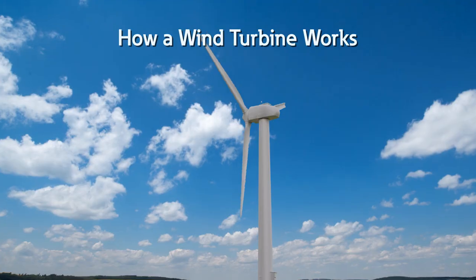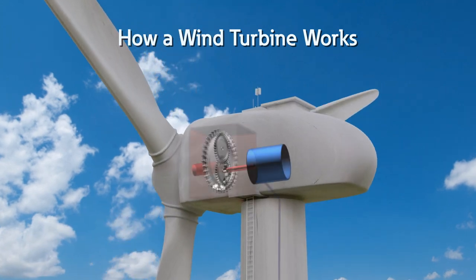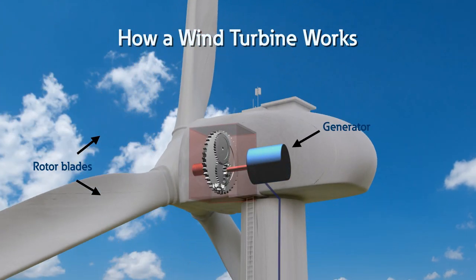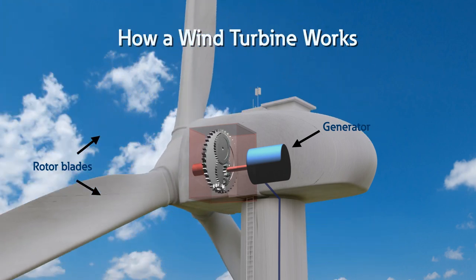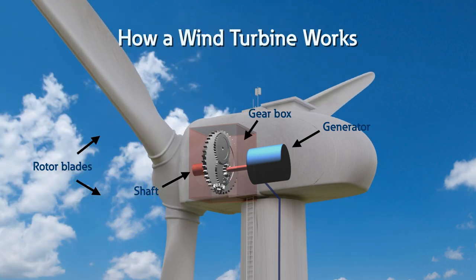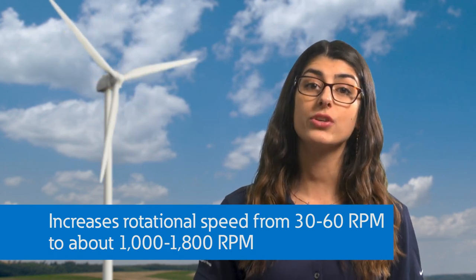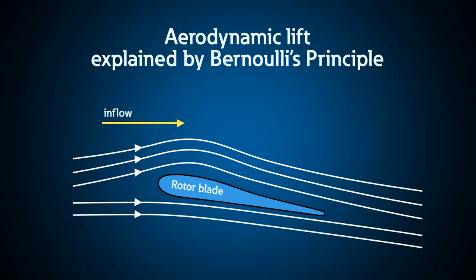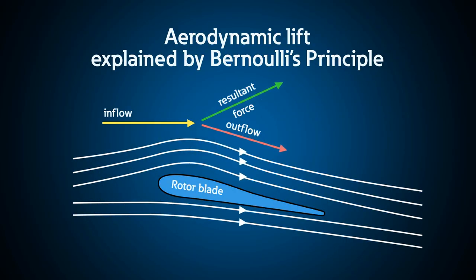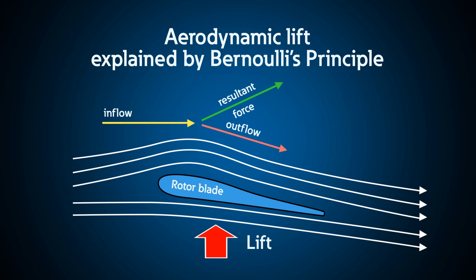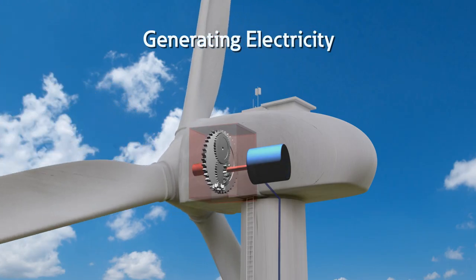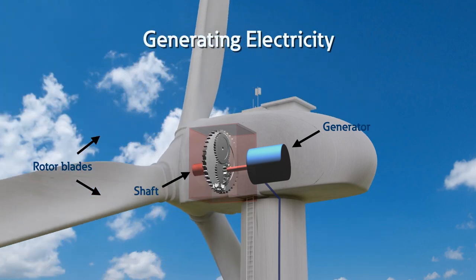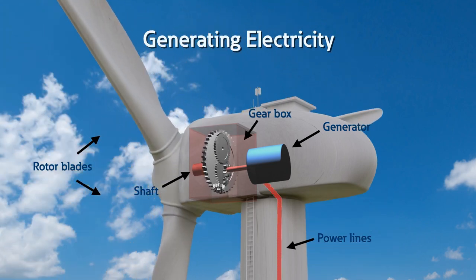A simple wind turbine consists of four main parts, including a generator, rotor blades which rotate when wind is blown over them causing the rotor to spin, a shaft which drives the generator, and a gearbox which increases the rotational speeds from about 30 to 60 rpm to about 1,000 to 1,800 rpm. The rotor blades work like an airplane wing or a helicopter rotor blade, explained by Bernoulli's principle. When wind flows across the blade, the air pressure on one side decreases and the force causes the rotor to spin, transferring mechanical power into rotational power. The rotor is connected to the generator through a shaft and a series of gears to speed up the rotation, and the mechanical power is converted to electrical power.